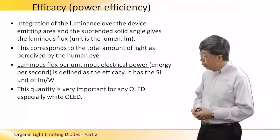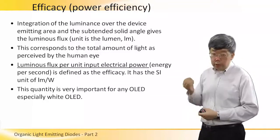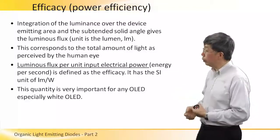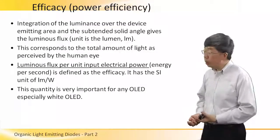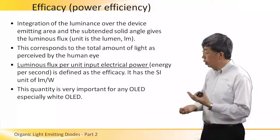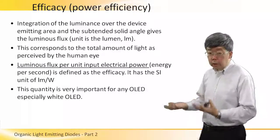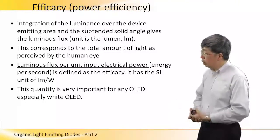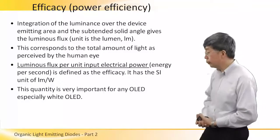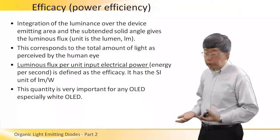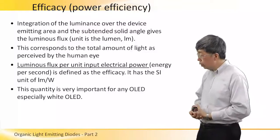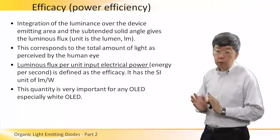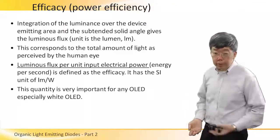If we divide the luminous flux by the electrical power — that is, the product of the voltage and the current applied to the OLED — we will get the efficacy. Unlike the EQE, the efficacy has a unit, and this is the lumen per watt. As mentioned, this lumen per watt is important for any OLED, but especially for the white OLED used in solid-state lighting.